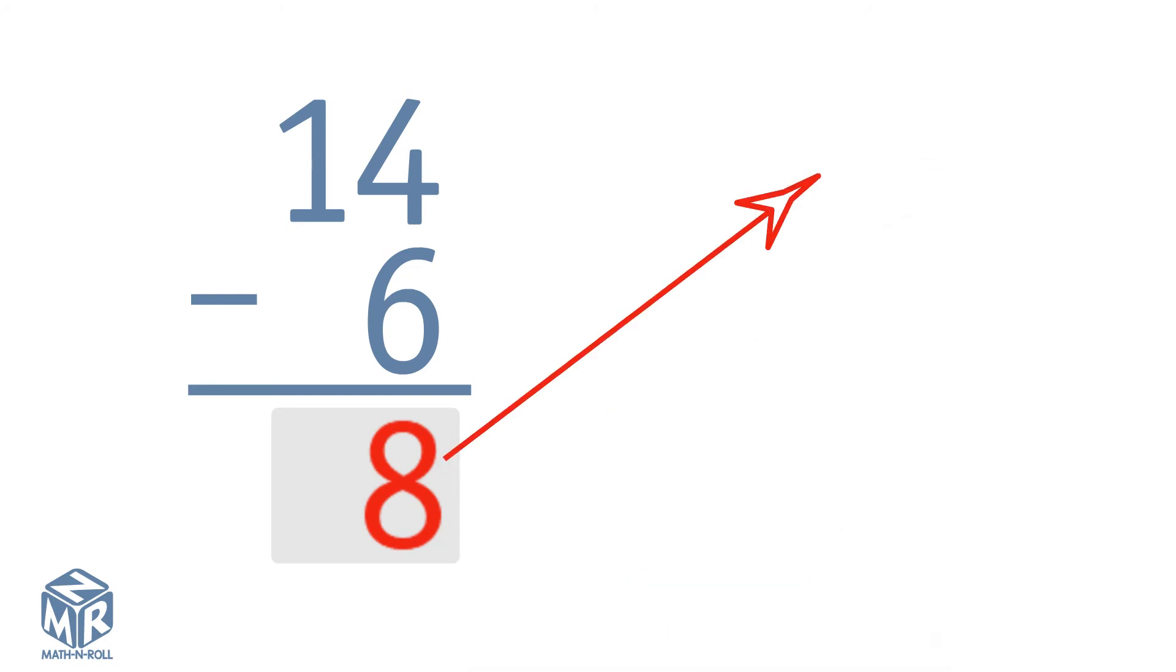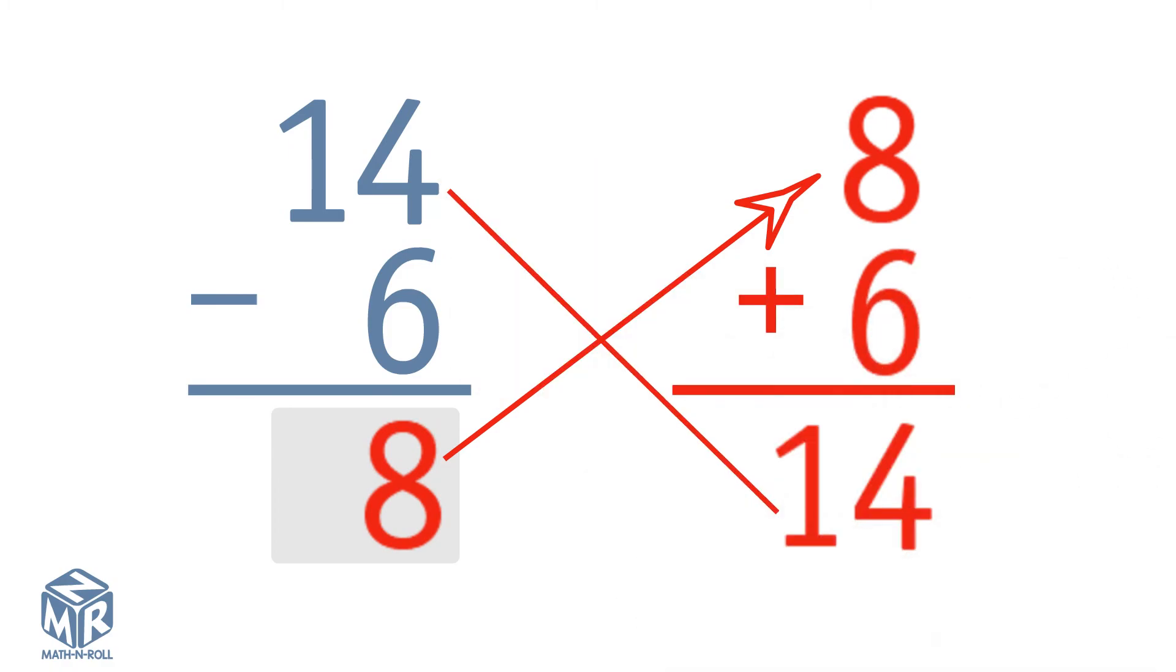Let's try another example. 14 minus 6 equals 8. 14 is the whole, and 6 and 8 are parts. To check our subtraction, we add the parts. 8 plus 6 equals 14. 14 equals 14, so our subtraction is correct.